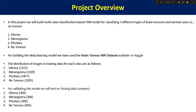Now we will move to the project overview. In this project we will be building a multi-class classification CNN model. We will not be building a CNN model from scratch; we will be using a transfer learning approach with ResNet. We will be classifying three different types of brain tumors: first is glioma, second is meningioma, third is pituitary, and the fourth class is normal cases. If any image comes in — from a mobile app or web application — the system should automatically identify the probability of these brain tumors.